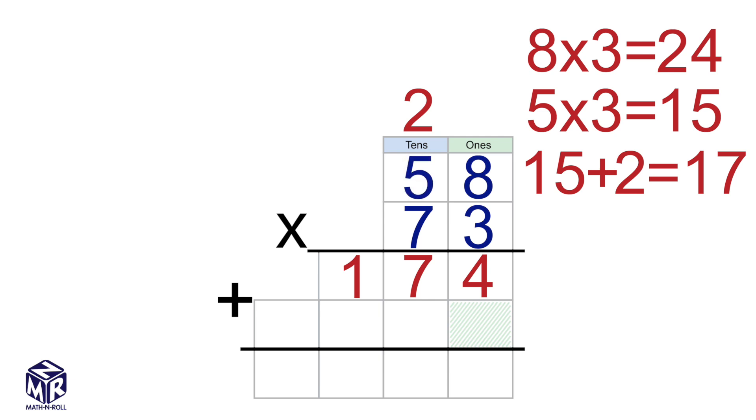Before multiplying 58 by 7, we have to put a placeholder of 0. We put a 0 because we are actually multiplying 58 by 70 because 7 is in the tens place.